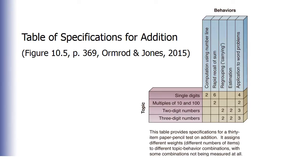It assigns different weights to different topic-behavior combinations. The numbers indicate the number of items out of 30 that are devoted to that topic-behavior combination. So out of the 30 items, it shows that six require the rapid recall of a sum for single digits. This table of specifications allows the teacher to see how much of the topics are covered compared to the others. The blank cells indicate that there are no questions on this assessment about that topic-behavior combination.